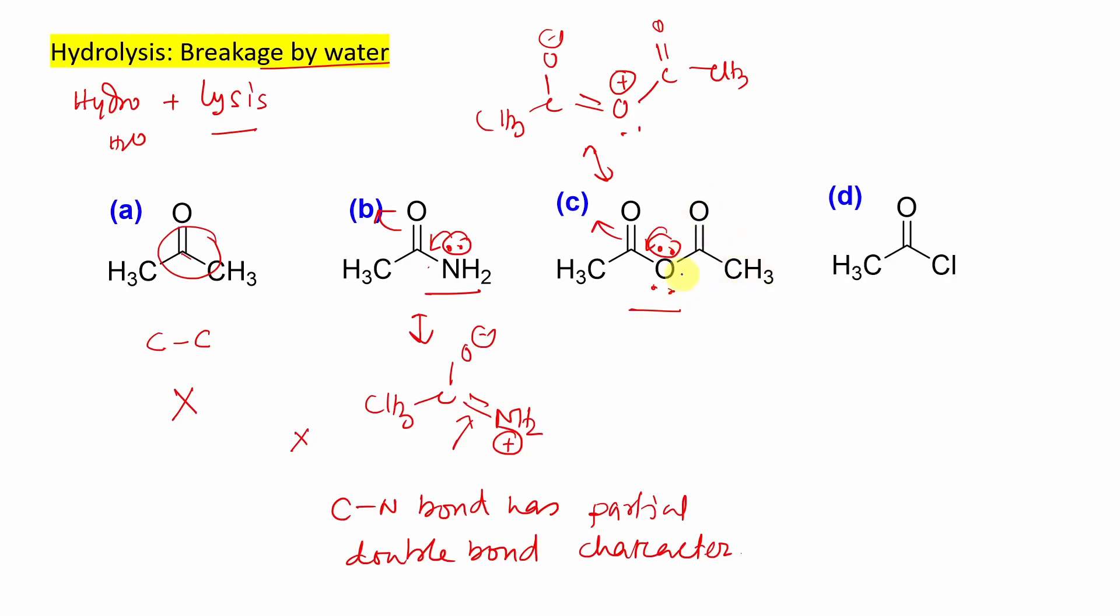So these lone pairs have some chances to delocalize in this side, along with similarly it has a chance to donate on this side too. So availability of these lone pairs for donation to this left side is lesser compared to the amide. So you can say in this case, this bond is little weaker, or you can say partial double bond character in this case. CO partial double bond character is less in anhydride.